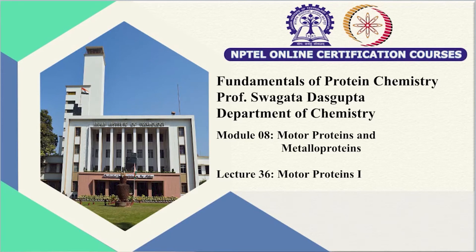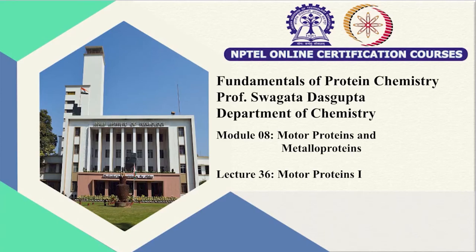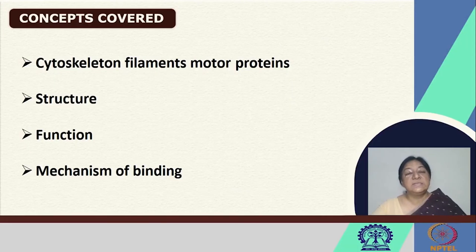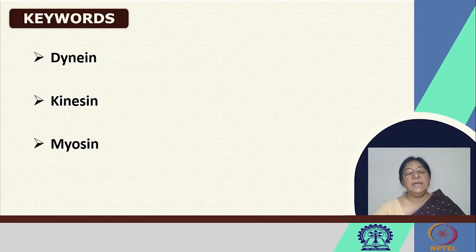We begin our discussion in module 8 on motor proteins and metalloproteins. In the first two lectures, we will be looking at motor proteins, the way they work, the way they function, and what we mean by these motor proteins. In our discussion, we will be looking at cytoskeleton filaments motor proteins, their structure, their function, their mechanism of binding, and exactly what they do in their very important role in a set of biological processes that go on in the body.